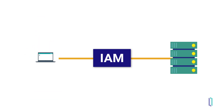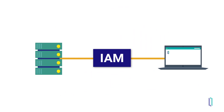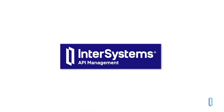To the downstream applications, almost all of this is simple and transparent — they are consuming your exposed APIs normally. Additional security enhancements could be added to your downstream applications as needed, of course. And remember, though the workflow is slightly different, IAM can also help in the inverse case, where your applications and InterSystems IRIS are consuming APIs that are available externally.